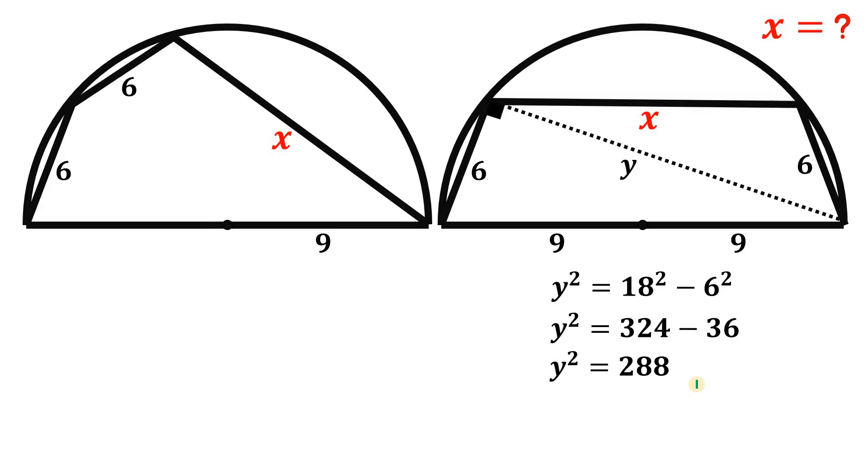Simplify this: we have 324 minus 36, y squared equals 288. Get the square root on both sides, and we take the positive value for y, and y is equivalent to 12 times square root of 2, and that is the length of this segment y.